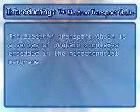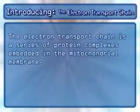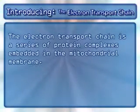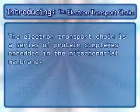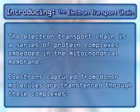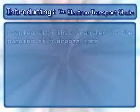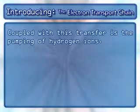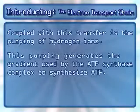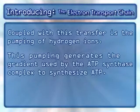The electron transport chain is a series of protein complexes embedded in the mitochondrial membrane. Electrons captured from donor molecules are transferred through these complexes. Coupled with this transfer is the pumping of hydrogen ions, which generates the gradient used by the ATP synthase complex to synthesize ATP.